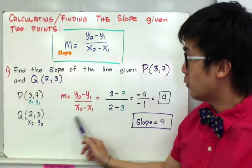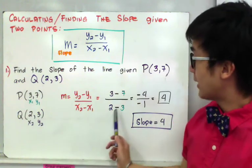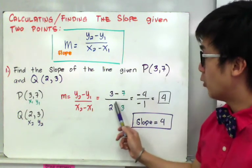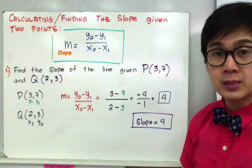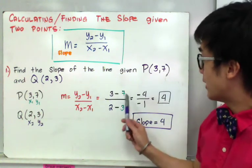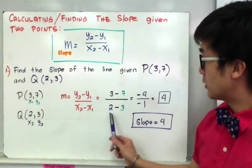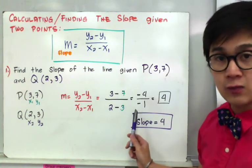all over x sub 2, which is 2, minus x sub 1, which is 3. So we'll have 3 minus 7 all over 2 minus 3. And by simplifying your expression, the numerator will be 3 minus 7, which gives you negative 4, and 2 minus 3 will give you negative 1.